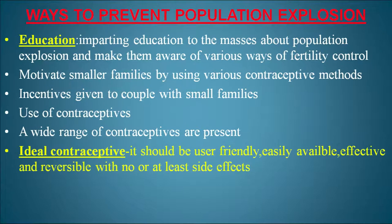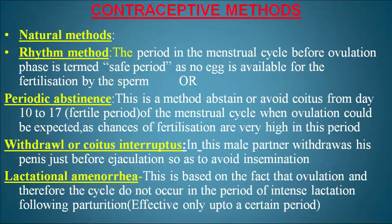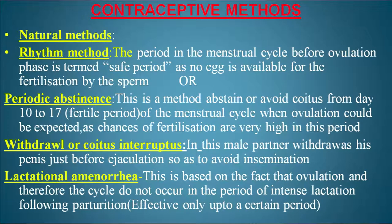A wide range of contraceptives are available. An ideal contraceptive should be user-friendly, easily available, effective, reversible, and with no or minimal side effects. Natural methods include: the rhythm method — the period before ovulation is the safe period as no egg is available; periodic abstinence — couples avoid coitus from days 10 to 17 (the fertile period) when ovulation is expected; and withdrawal or coitus interruptus — the male partner withdraws his penis just before ejaculation to avoid insemination.